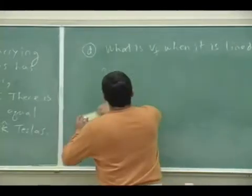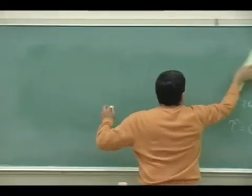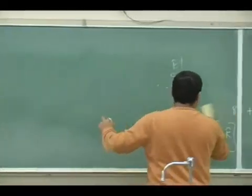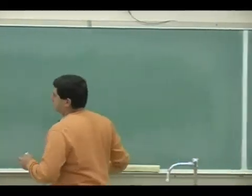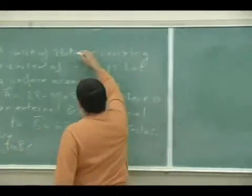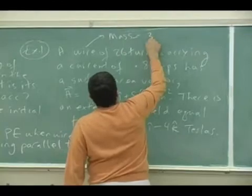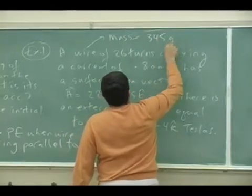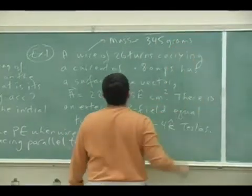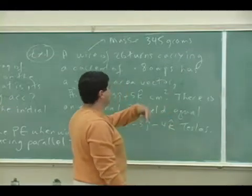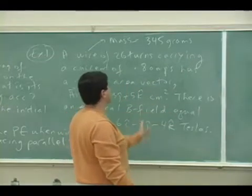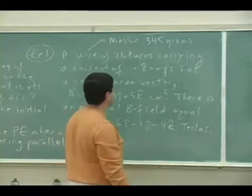This is now something from physics one. I would have to, did I give you the mass of the wire? No, I would have to give you the mass, right? So let's say a wire of mass 345 grams, but it's turned around so that it's got 26 turns. So the total mass is 345 grams.